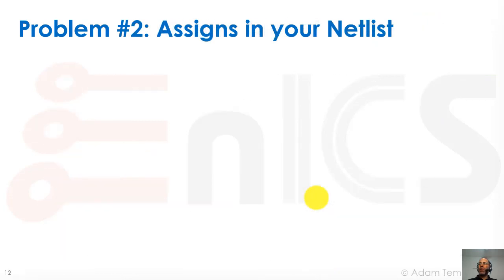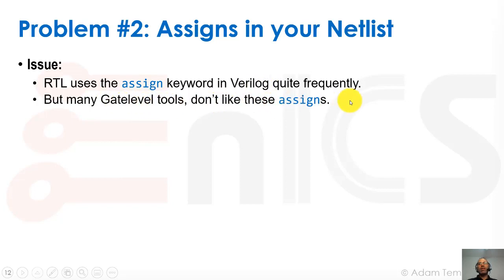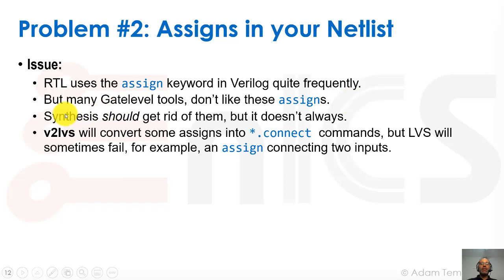Another problem is assigns. As you know, there's an assign keyword in Verilog and we use it quite often — we connect two nets together or provide some sort of a mathematical or binary type of logic that goes from one net to another using the assign keyword. Many gate level tools don't like assigns. Basically, assign is a type of RTL construct and we want in gate level to have a completely structural design with no assigns in it. Synthesis usually does and should get rid of these assigns, but it doesn't always — some things like connecting two nets together may leave the assign in there. V2LVS, which is a tool we'll discuss in a little while, will convert some of the assigns into a SPICE-level connecting command, which is a star dot connect.